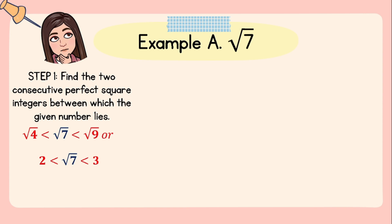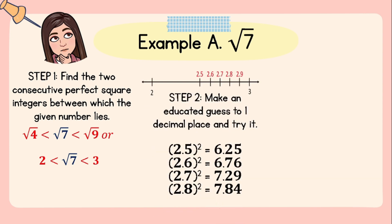Step number two: make an educated guess to one decimal place and try it. Since 7 is closer to 9 than 4, we can say that the square root of 7 is closer to 3 than 2. We then square numbers closer to 3 with one decimal place: 2.5² = 6.25, 2.6² = 6.76, 2.7² = 7.29, and 2.8² = 7.84. From here we can say that the square root of 7 lies between 2.6 and 2.7.